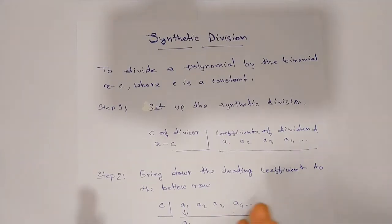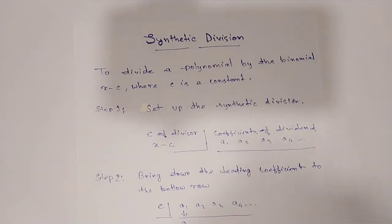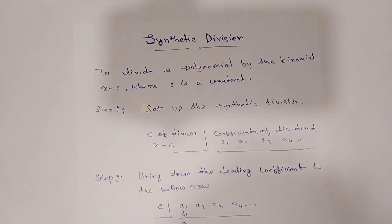Namaste students. Today we are going to see a shortcut method called synthetic division to divide a polynomial by a binomial X minus C, where C is a constant.